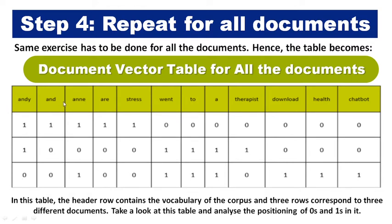We have three documents, so we create a table of four rows — one header row plus three document rows. The top row has the unique words from the dictionary, and then the occurrences of all words are written for each document. Document 1: Andy and any are stressed. Document 2: Andy went to a therapist. Document 3: Andy went to download a health chatbot, with some stop words removed. The header row contains the vocabulary of the corpus, and the three rows correspond to the three documents.